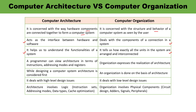Organization expresses the realization of architecture, while a programmer can view or observe architecture in terms of available attributes — instructions, addressing modes, number of bits required to represent data, and registers. When designing a computer system, architecture is considered first; then organization can be done on the basis of the architecture. Computer architecture deals with high-level design issues, while organization deals with low-level design issues. Architecture involves logic like the instruction set, addressing modes, data types, and optimization.